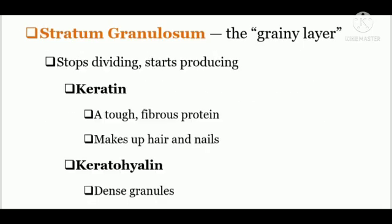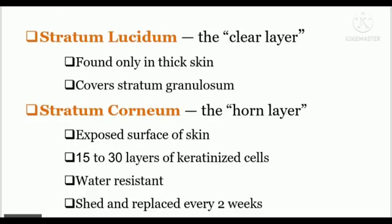The next layer, stratum granulosum, is also called the grainy layer. These granulosum cells produce keratin and keratohyalin — these are the two important fibrous proteins. Keratin is a very tough fibrous protein that also makes up your hairs and nails. Keratohyalin are dense granules that have cross-linked keratin fibers.